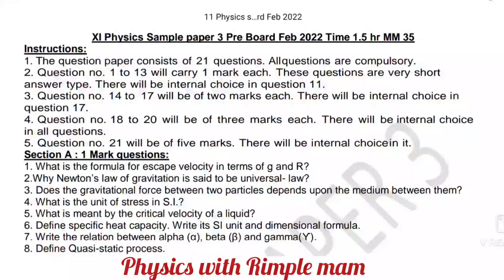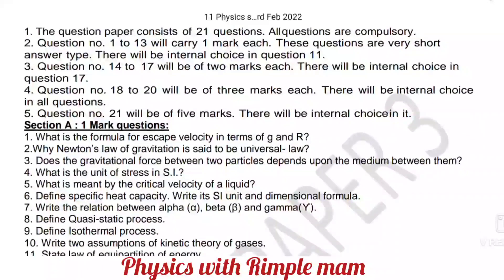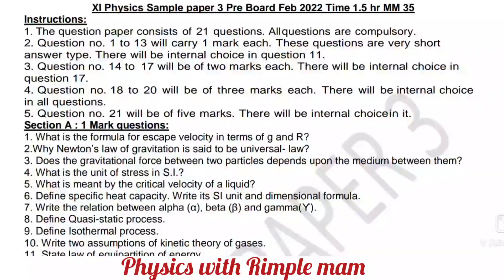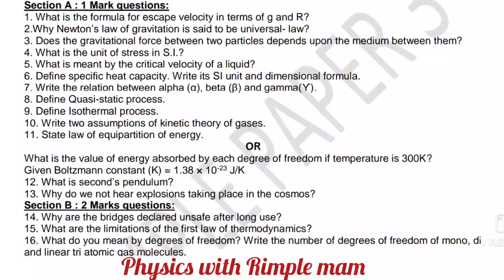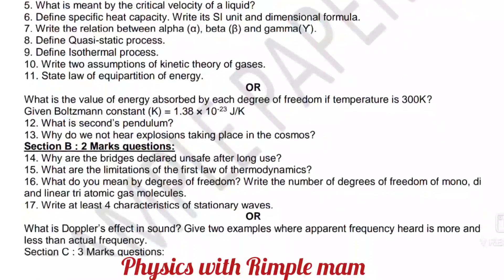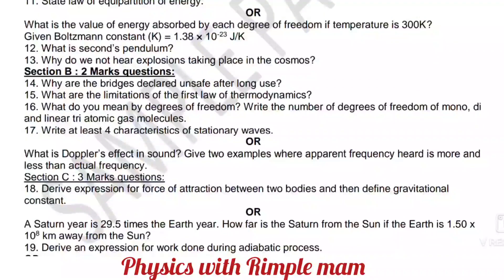As we already discussed, there will be 21 total questions. Questions 1 to 13 are one mark questions, 14 to 17 are two marks questions, 18 to 20 are three marks questions, and the last question 21 is a five marks question. You will get internal choice in three marks and five marks questions, so if you want to skip numericals, you can. Let's take a look at the paper to see which chapters have easy questions.